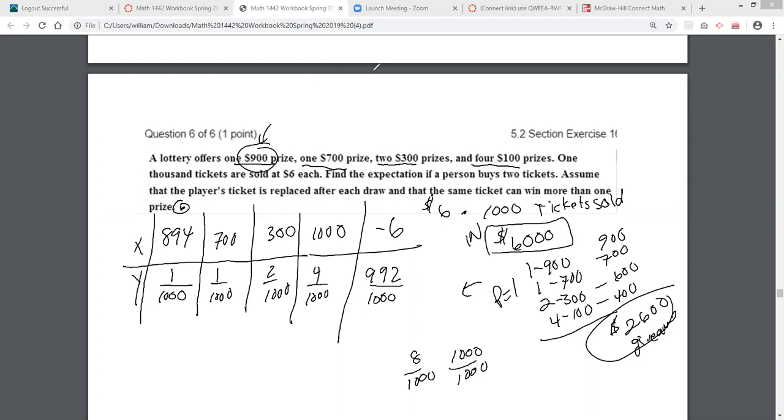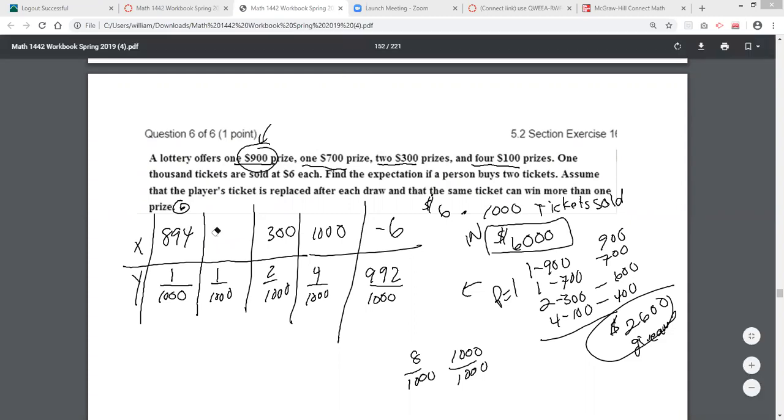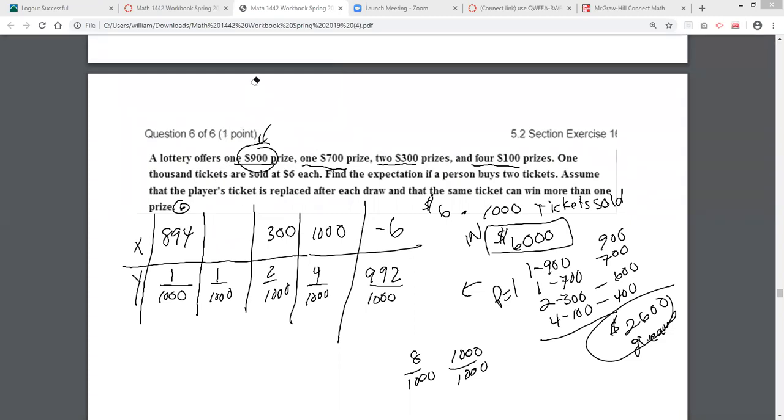Same way with the $700. I didn't win, if I won this, I didn't win $700. I won $700 minus $6 because I paid $6 for that ticket. $700 minus $6 is $694. The same thing goes for the $300.